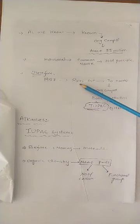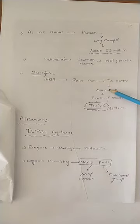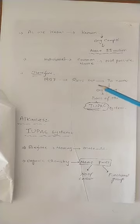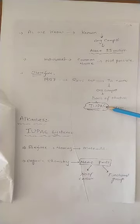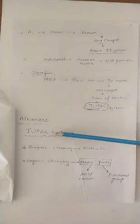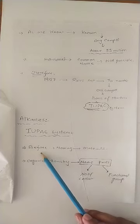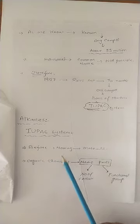Toh is wajah se kya hua? Therefore, in 1957, ek rules set kiya gaya to name the organic compounds. Jitni bhi organic compounds hain, in ko naam dene ke liye ek rule set kiya gaya, aur wo rule ka jo base tha, that base was on the basis of structure. Aur isko naam diya gaya IUPAC system. Toh 1957 se phir organic compounds ko jo naming system introduce hua, usko kaha jata hai IUPAC system.